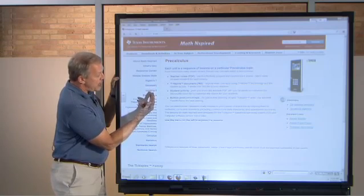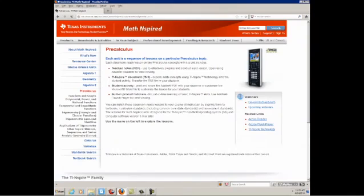algebra one, geometry, algebra two, pre-calculus, calculus statistics. And each one is subdivided into seven to ten different units or chapters, if you will. And each of those chapters has several TNS documents and activities ready for you to use.